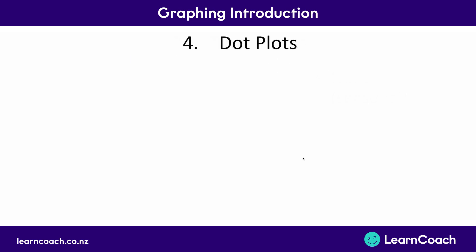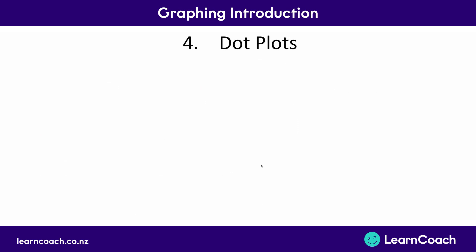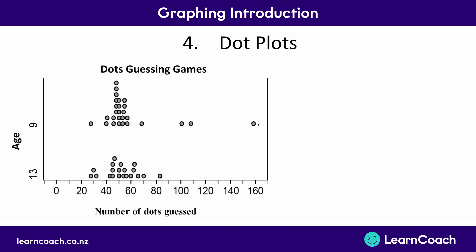The fourth type of graph is a dot plot, which is just a visual representation comparing two or more things. Here, we're comparing 9-year-olds to 13-year-olds guessing the number of dots on a graph. You'll notice that both groups tend to guess around the 40 to 60 region, but a couple of 9-year-olds guessed particularly high values — much higher than normal. You can call these outliers as well.